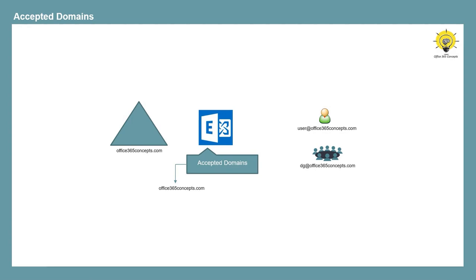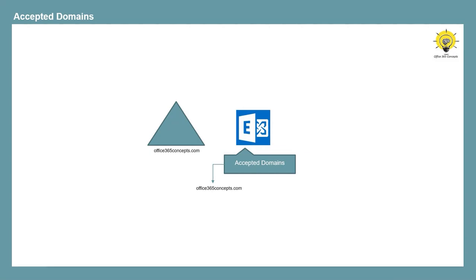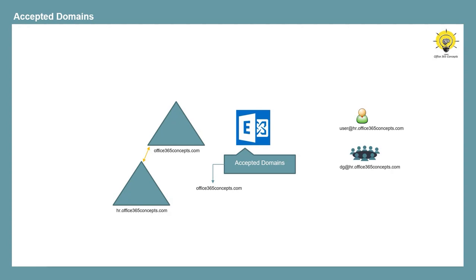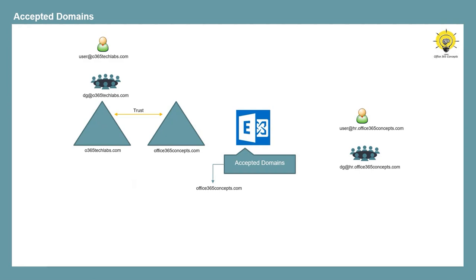These mail-enabled recipients will use that email address to send and receive emails. But you can come across scenarios where you want to add additional domains or sub-domains in your on-premise Exchange organization. For example, you may have a sub-domain like hr.office365concepts.com that you want to use as a domain suffix, or you have acquired another company and want to use a different domain for users belonging to that company. In these scenarios, you would need to add the additional domains under accepted domains before using them for email addresses.